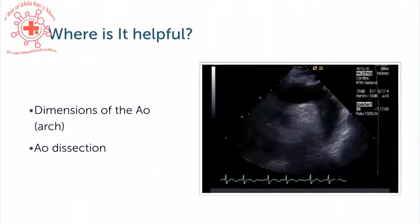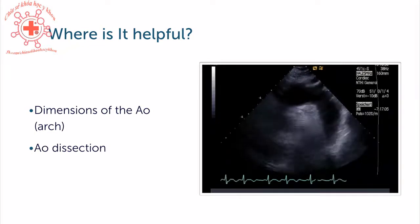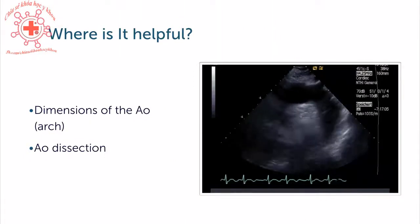The third important indication is to detect dissection and aneurysms of the aorta. We can nicely measure the aortic arch and the descending aorta and see intima flaps. If I have a patient who has a dilated ascending aorta in a parasternal long axis view, I would always include a suprasternal view in my exam.